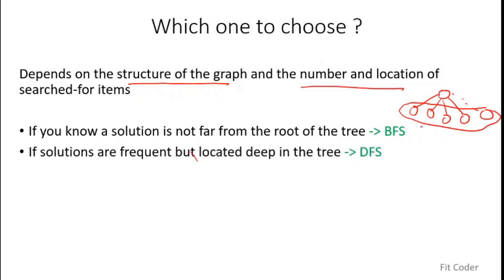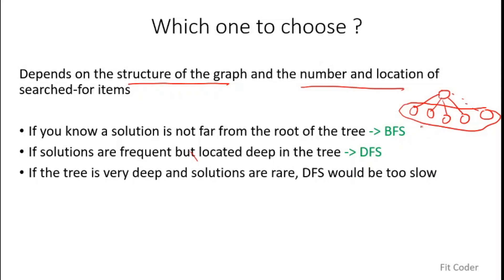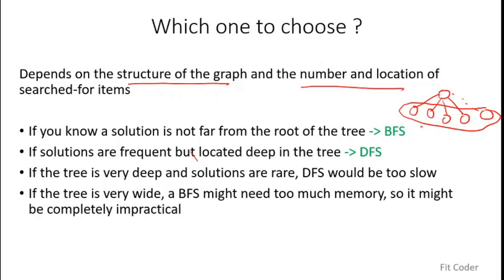If the solutions are frequent but located deep down inside the tree, we should go for DFS because DFS keeps traversing a path until it meets a dead end, making it more likely to find deep nodes sooner. But if the tree is very deep and solutions are rare, DFS will take too much time going deep down one path before backtracking. And if the tree is very wide, BFS will take too much memory saving all children nodes in the queue — especially for infinite graphs like Facebook or GPS navigation systems, where it becomes impractical. In that case, we go for DFS.